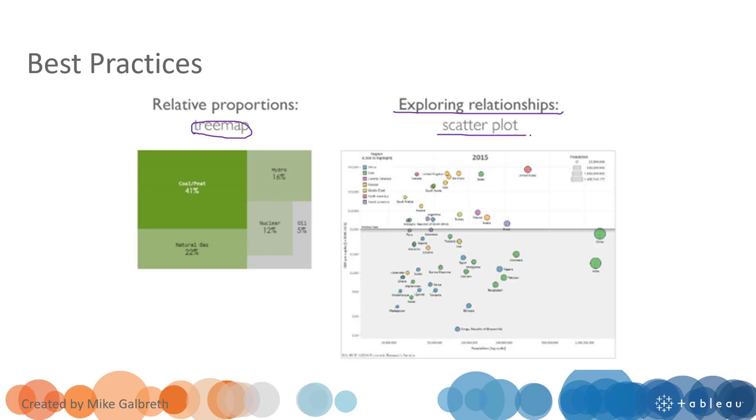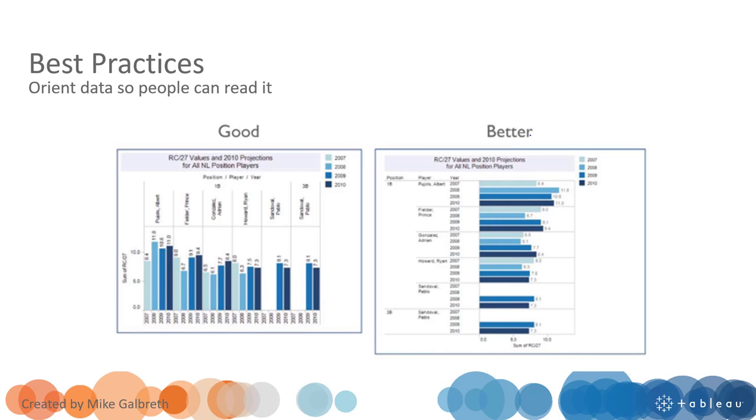Pay attention to the orientation. Sometimes when you create visualizations, they will just give you a visualization automatically created. When people look at those labels, it's very hard for them to view the information. Pay attention to the orientation so that, in this case, if you put the label on the left, it is very easier for people to understand your visualization.